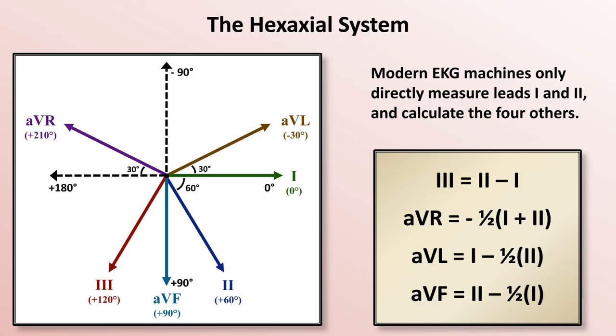If these were the only leads available to us, we would only have an understanding of the heart's electrical activity in two dimensions. In order to observe and understand it in three dimensions, another set of leads within a different plane are used. These are the precordial leads.